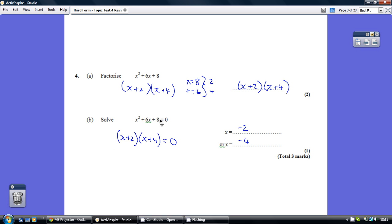Now solving just adds this extra step where this equals 0, so what we've just worked out equals 0. How do we make this first bracket 0? Well, x is minus 2. How do we make the second bracket 0? Well, x is minus 4.